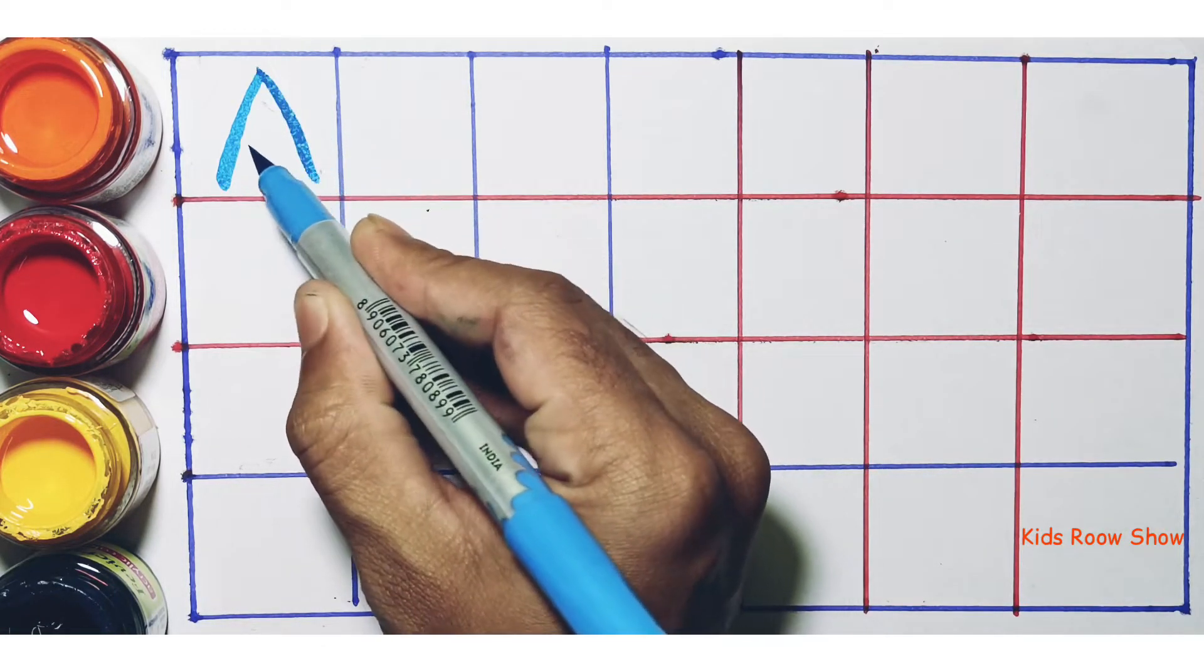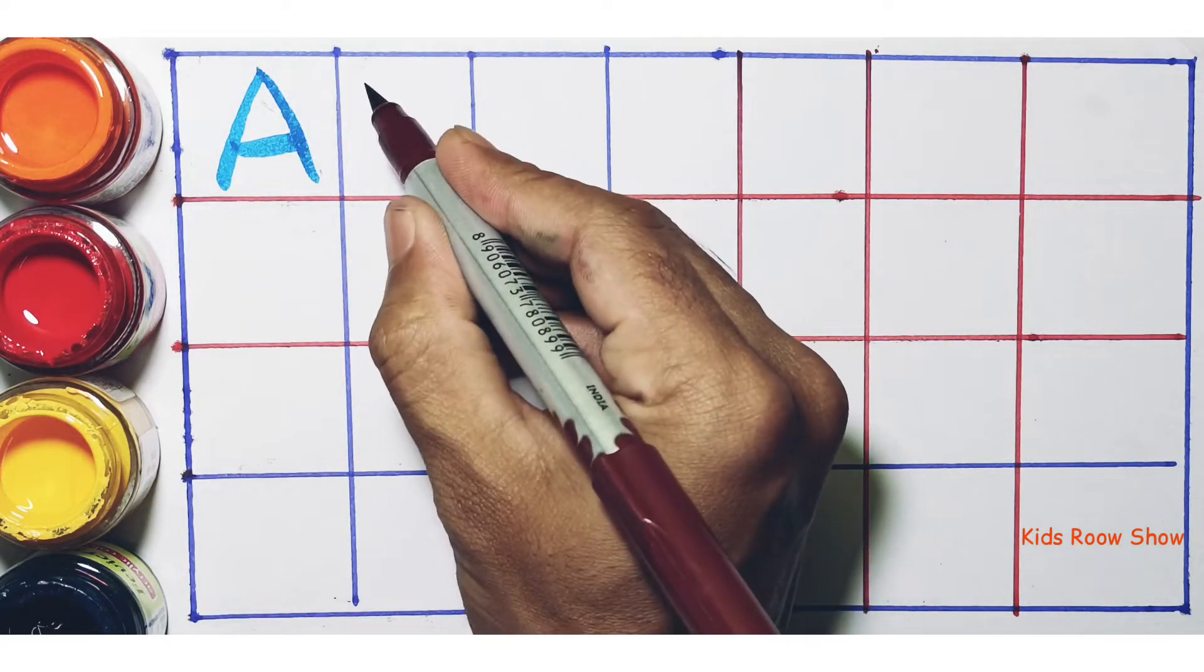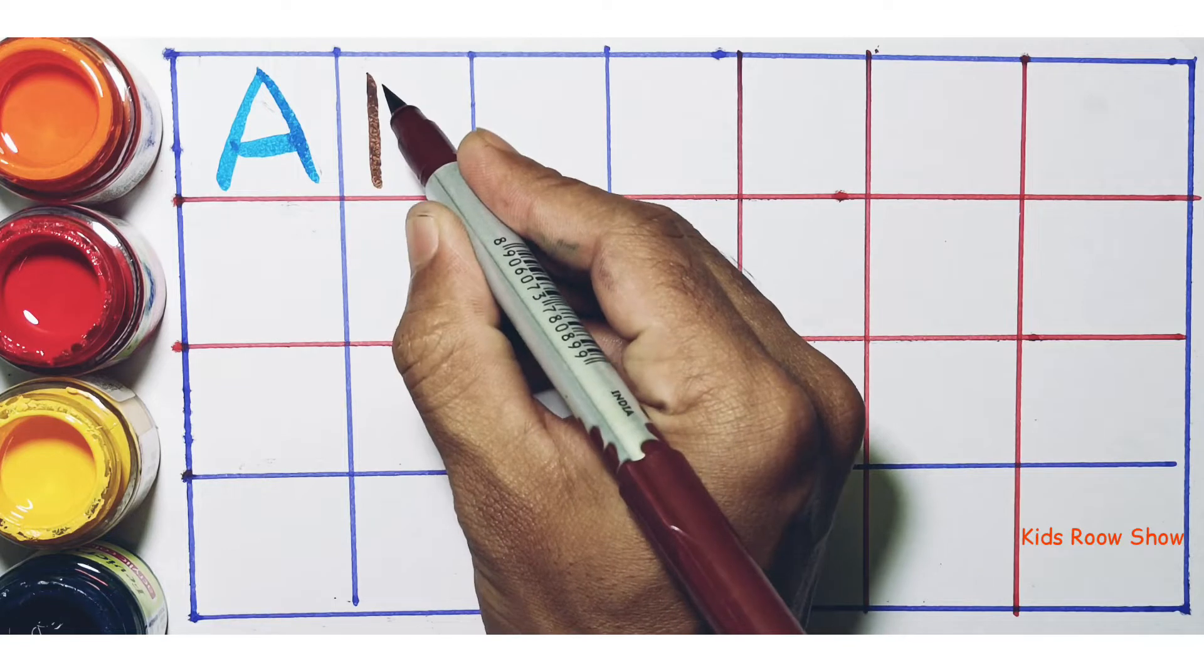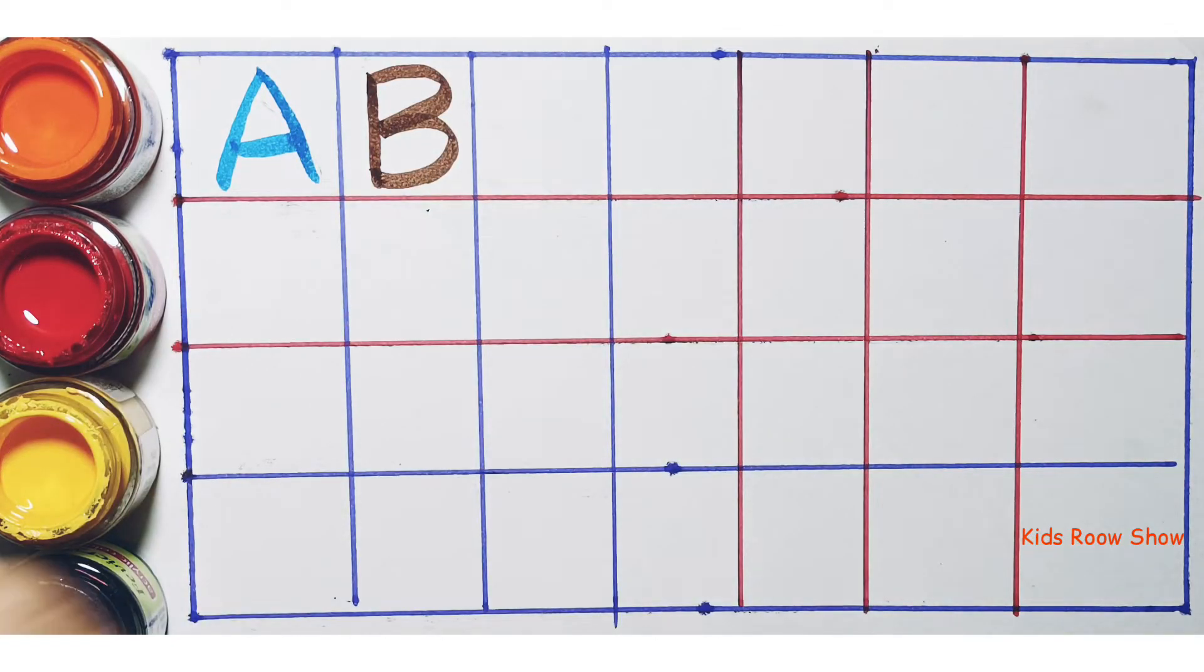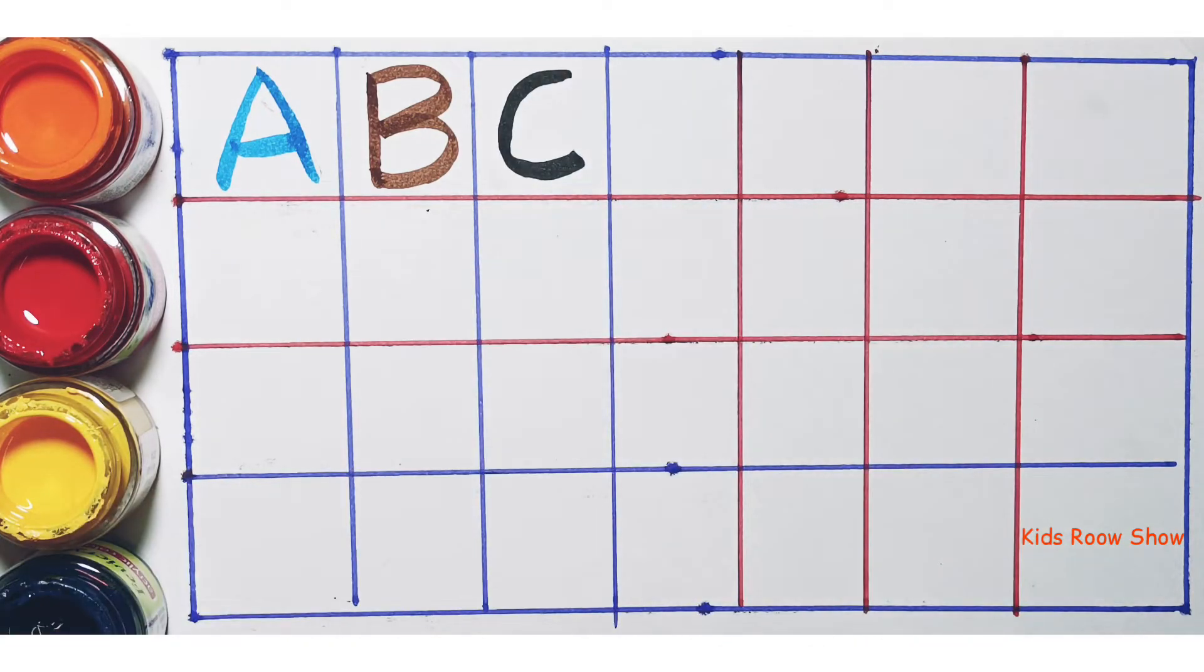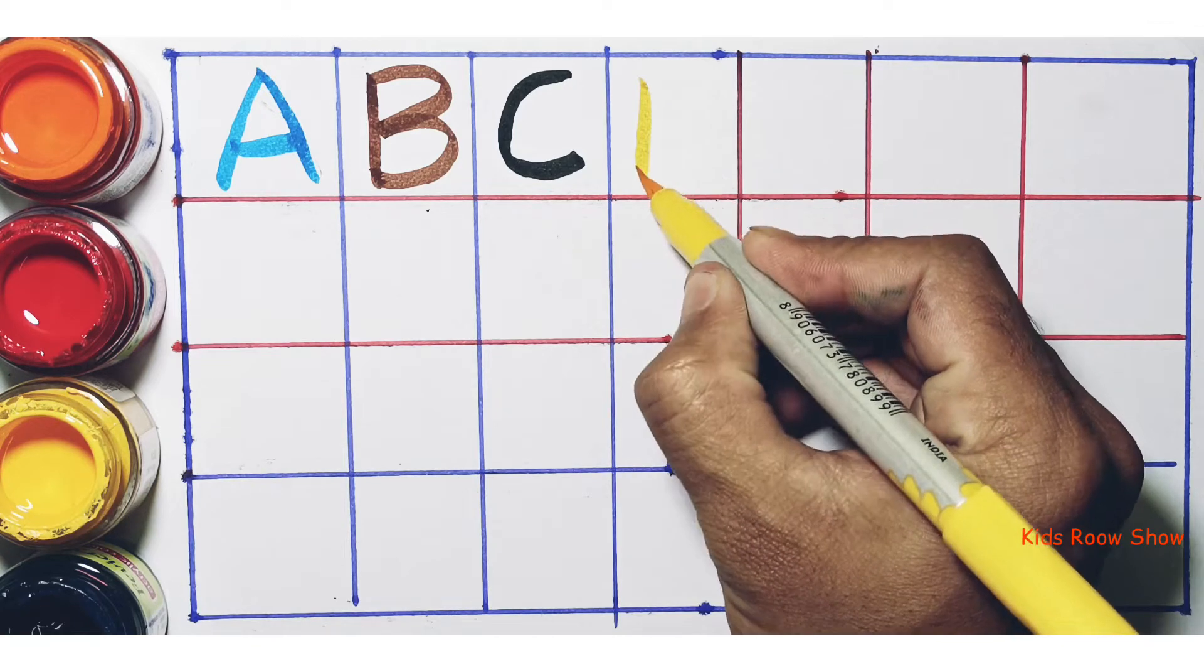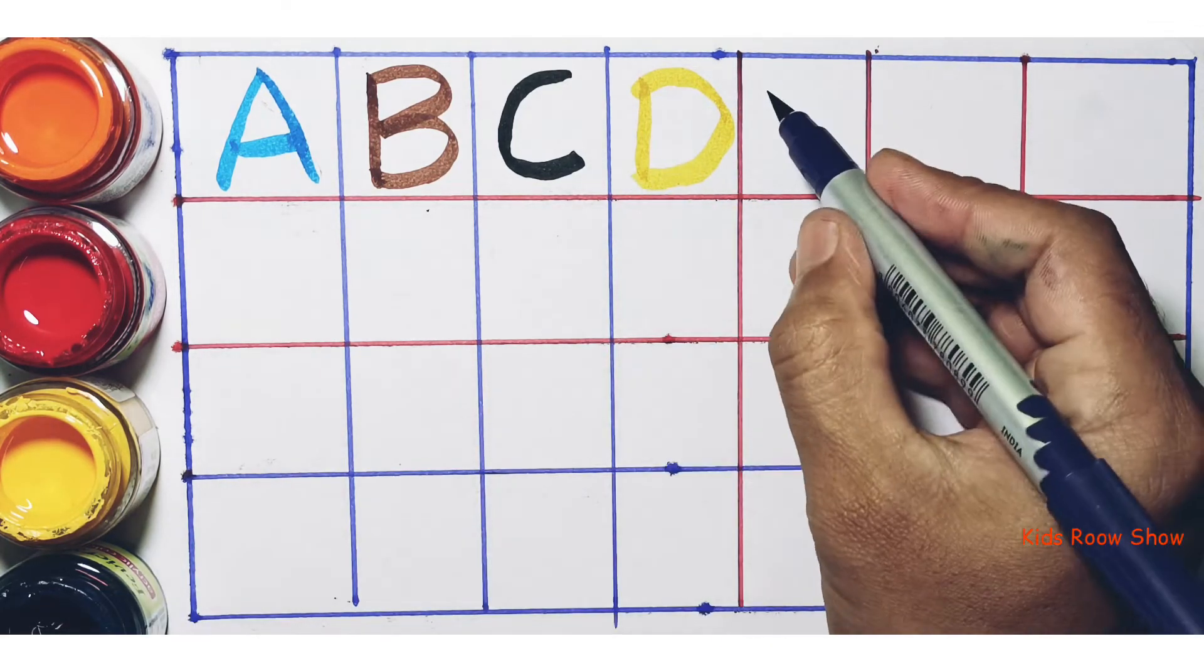A. A for apple. B. B for ball. C. C for cat. D. D for dog.